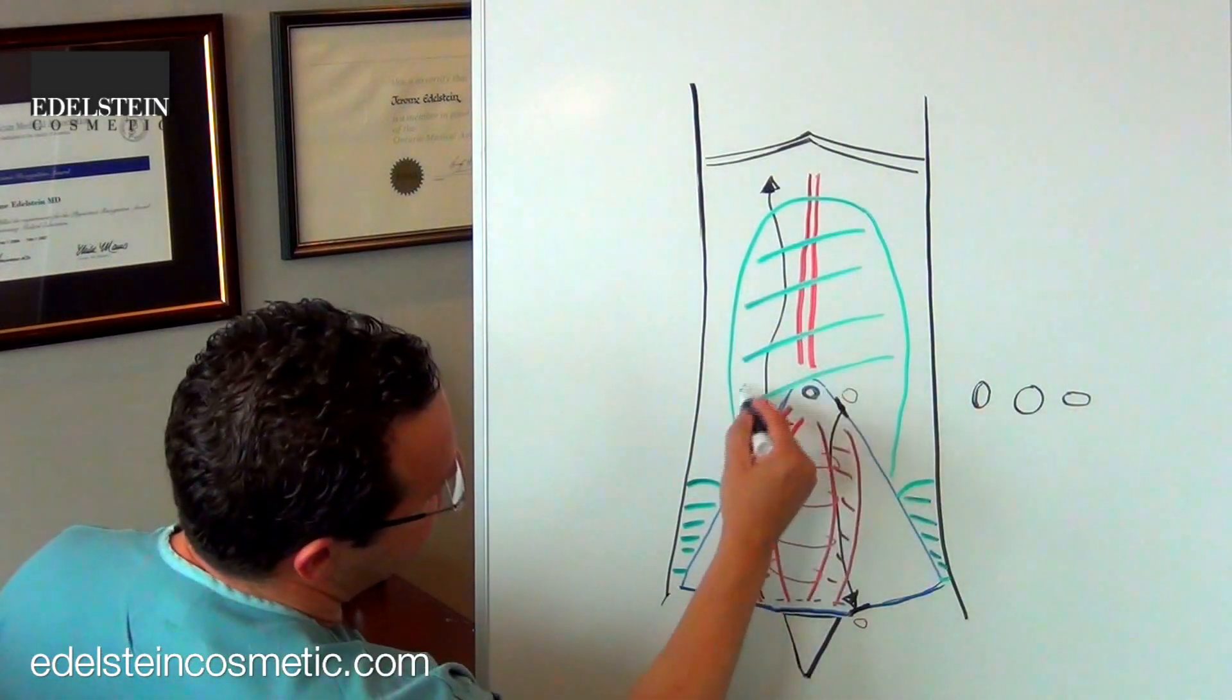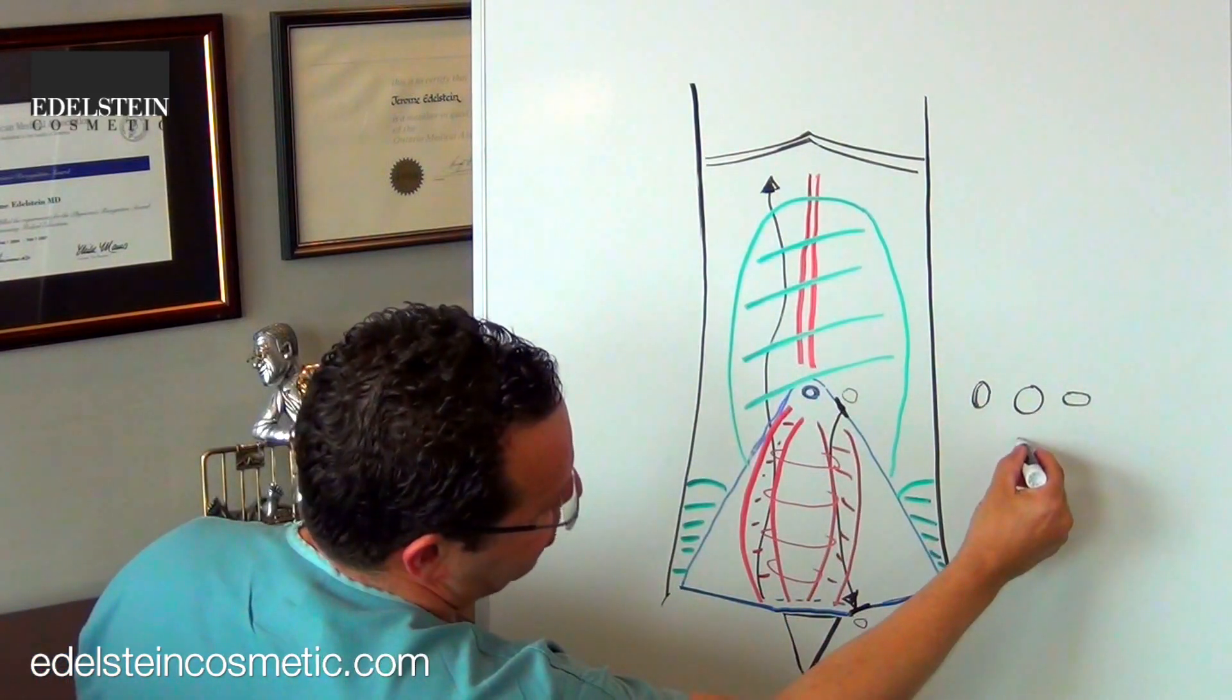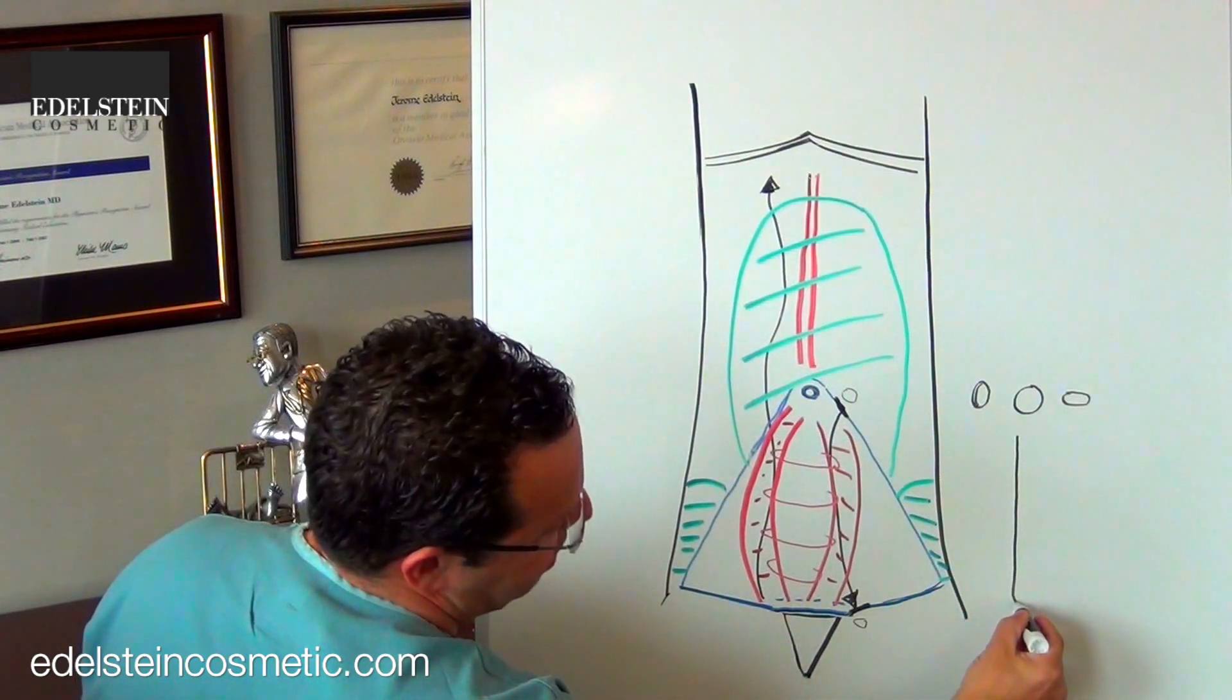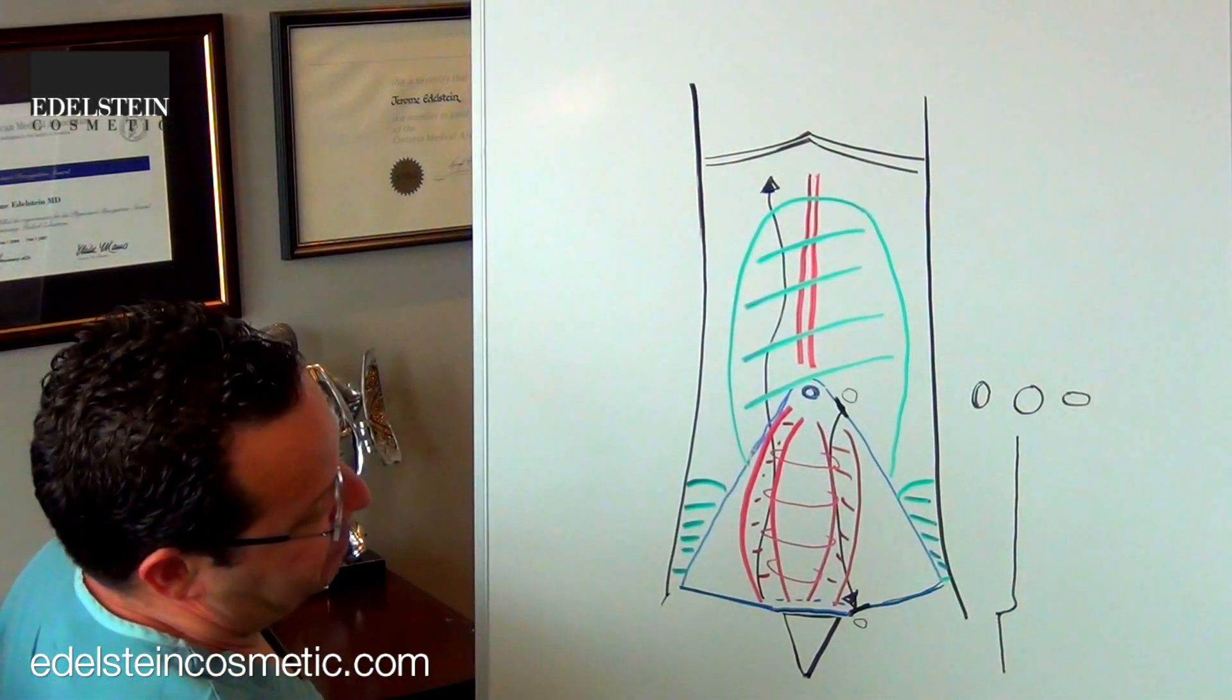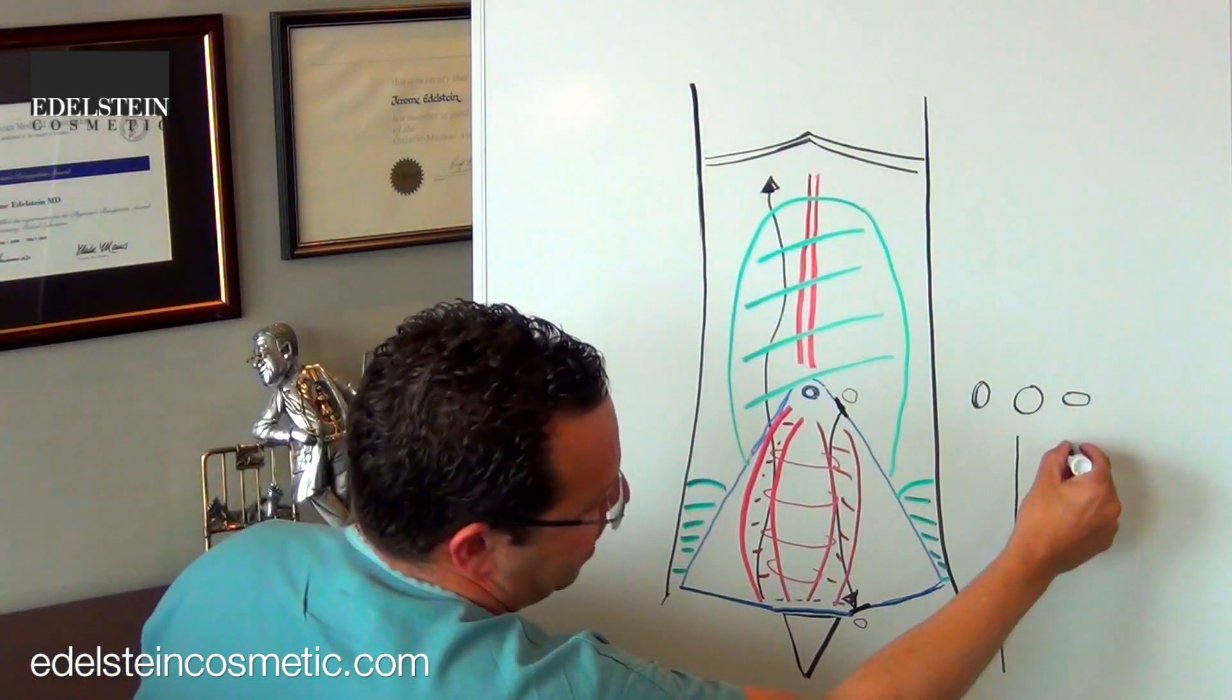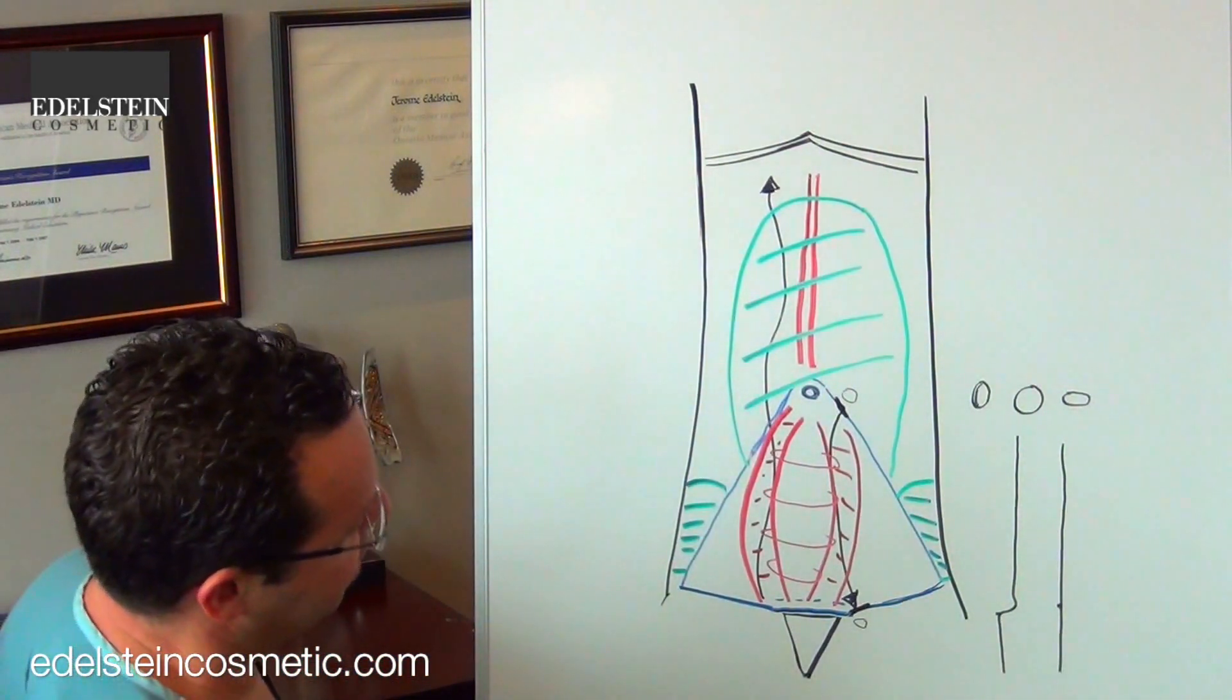So if we don't thin out this upper area with liposuction, often what you'll see if you look at a person from the side is your stomach is flat, and when you get to the incision there's a little jog. It kind of defeats the purpose of the tummy tuck. We want it to be flush at the incision. That's the reason for the liposuction there.